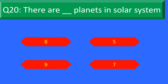Moving to question number 20. There are dash planets in the solar system — Option A: 8, Option B: 5, Option C: 9, and Option D: 7. Your time starts now.